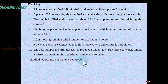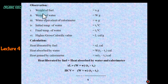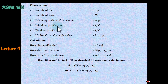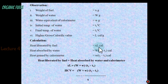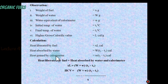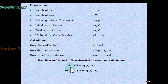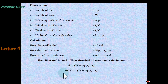Observations: weight of fuel = x g; weight of water = W g; water equivalent of calorimeter = w g; initial temperature = T1°C; final temperature = T2°C; HCV = L cal/g. Heat liberated by fuel = x × L. Heat absorbed by water = W(T2 − T1). Heat gained by calorimeter = w(T2 − T1). By heat conservation: xL = (W + w)(T2 − T1). Hence HCV = (W + w)(T2 − T1) ÷ x.